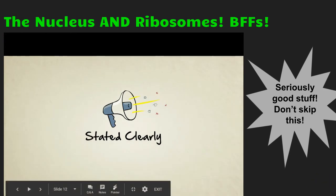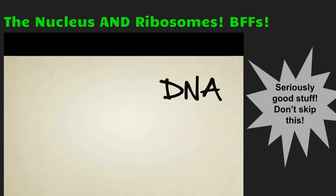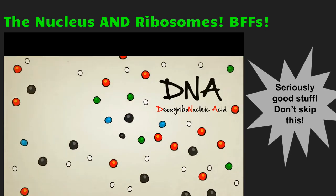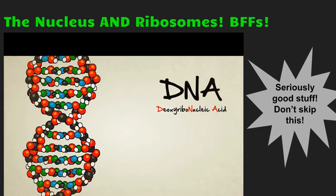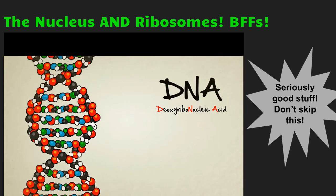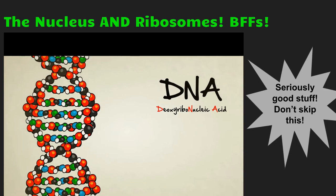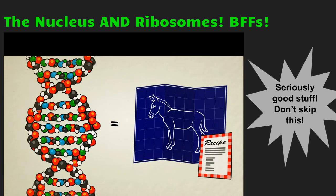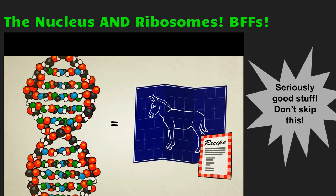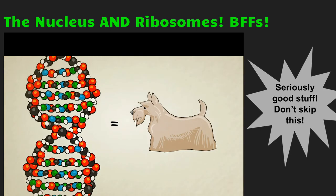Stated Clearly presents: What is DNA and how does it work? DNA, also known as deoxyribonucleic acid, is a molecule — a bunch of atoms stuck together. In the case of DNA, these atoms combine to form the shape of a long, spiraling ladder. If you ever studied biology or saw the movie Jurassic Park, you probably heard that DNA acts as a blueprint or a recipe for a living thing. But how can a mere molecule act as a blueprint for something as complex as a tree, a dog, or a dinosaur?